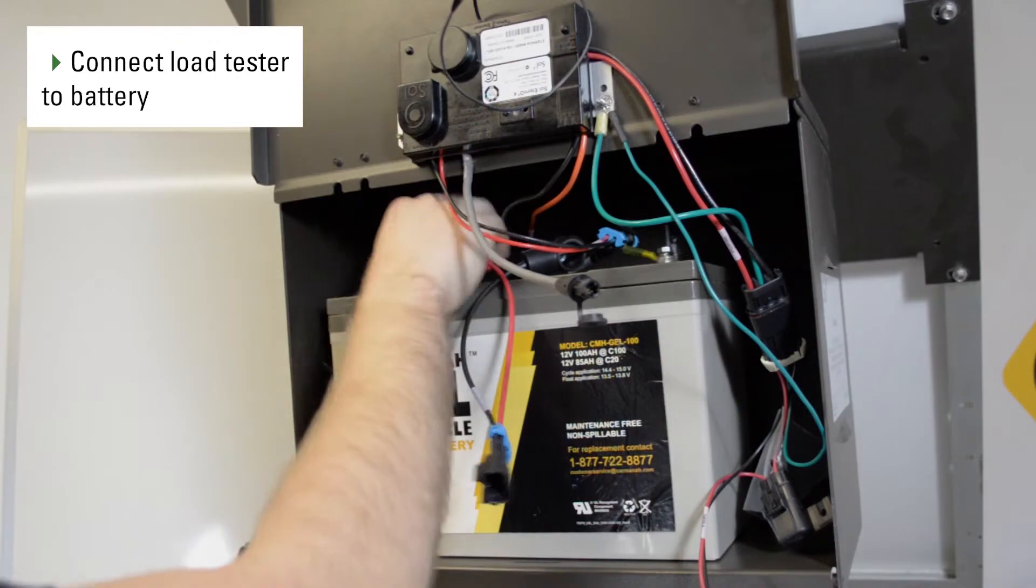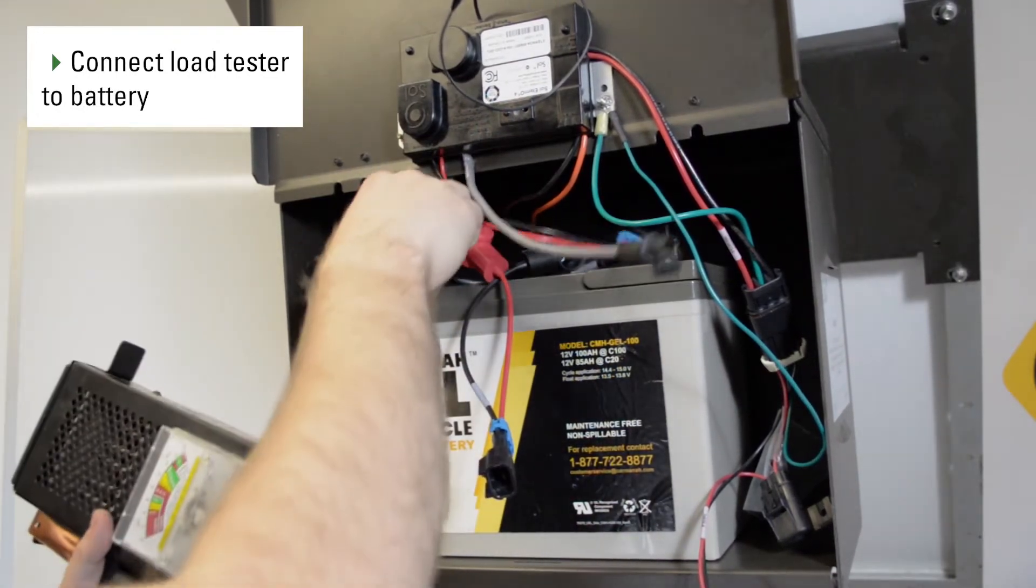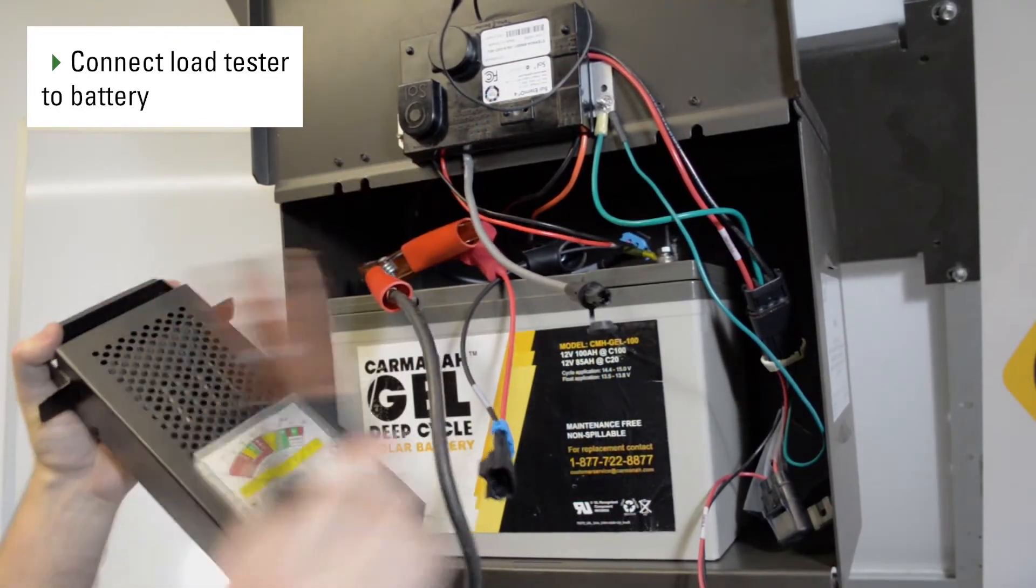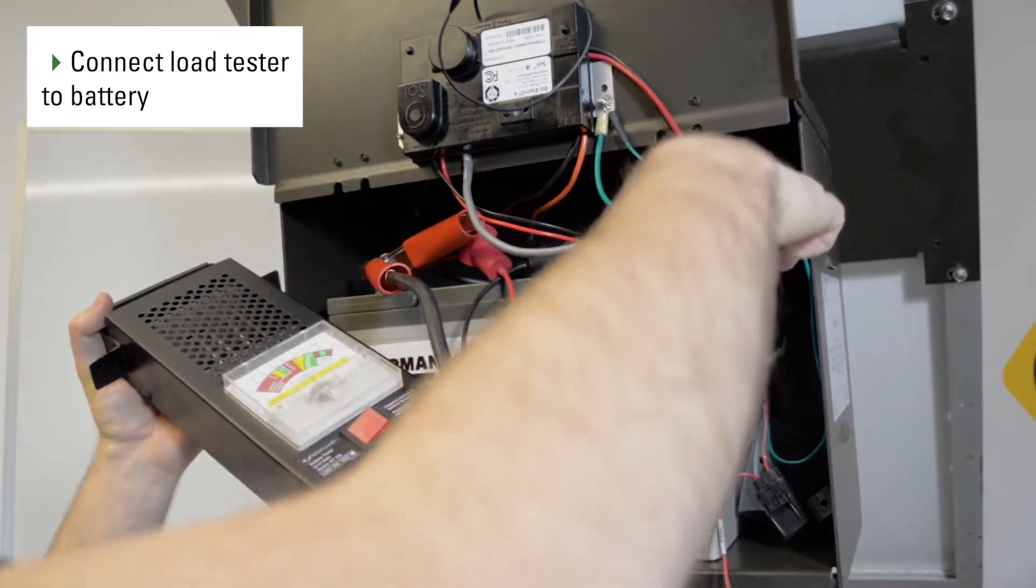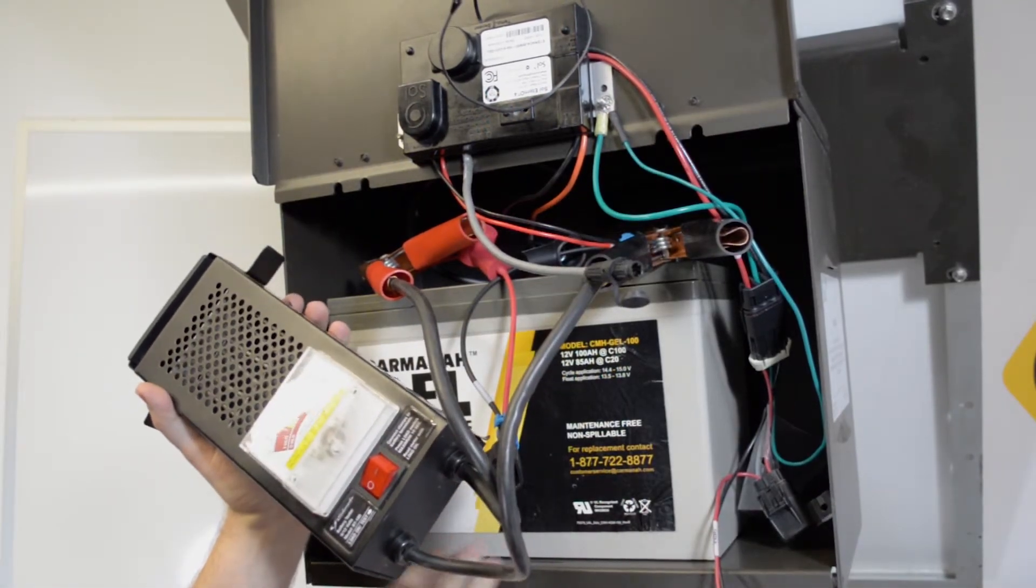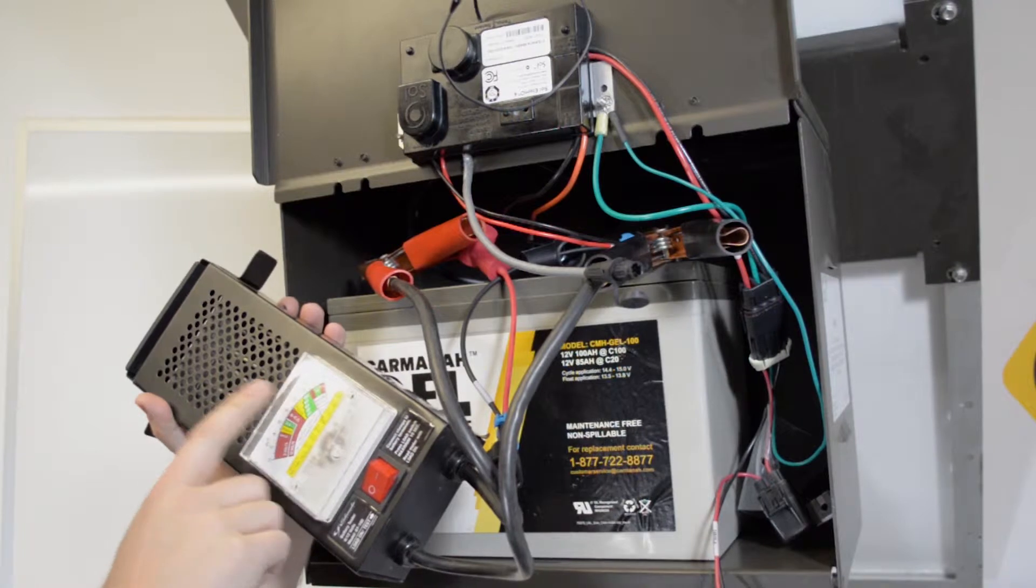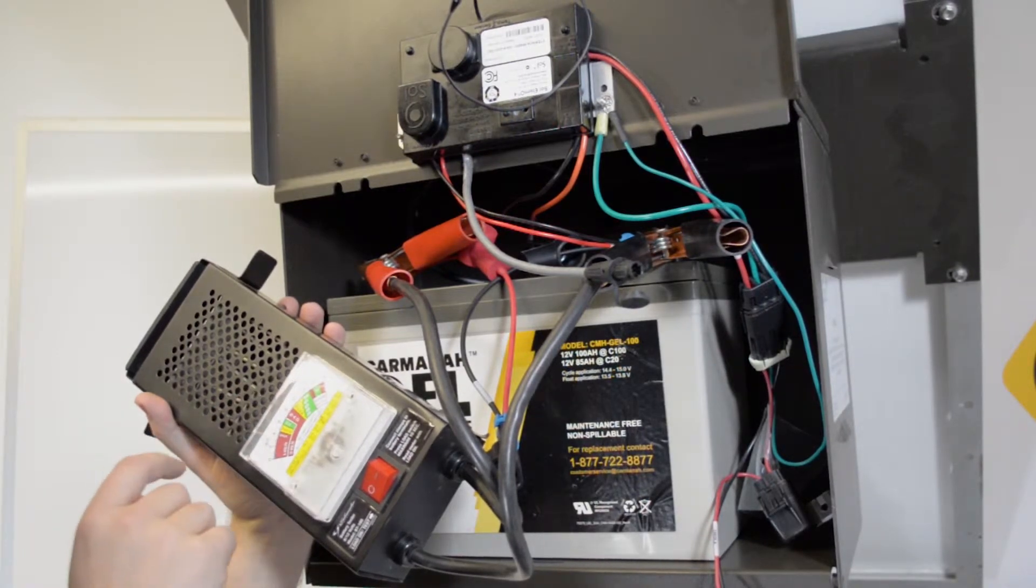This allows you to get a true reading of the battery voltage. Using the load tester, connect to the battery. This particular system has a good battery, but if it was poor, you'd see a voltage somewhere between 11 and 12 volts.